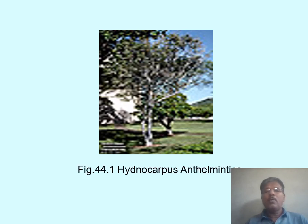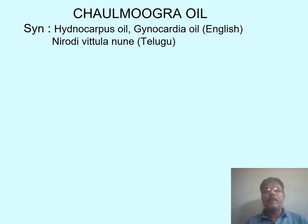The plant of Chaulmoogra looks like this. It is Hydnocarpus anthelmintica. Chaulmoogra oil has various synonyms — it is also called Hydnocarpus oil, also famous as Gynocardia oil in English. It is also called Neurodi Vitula Noon in Telugu.